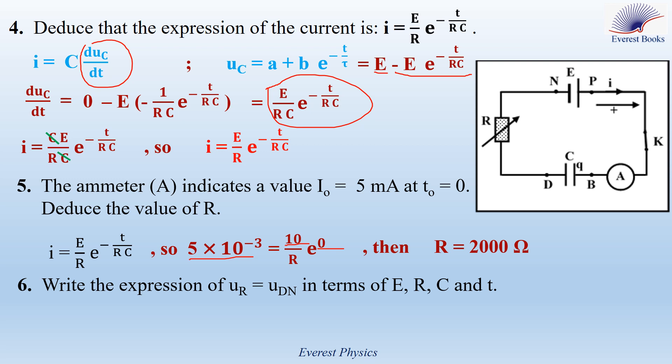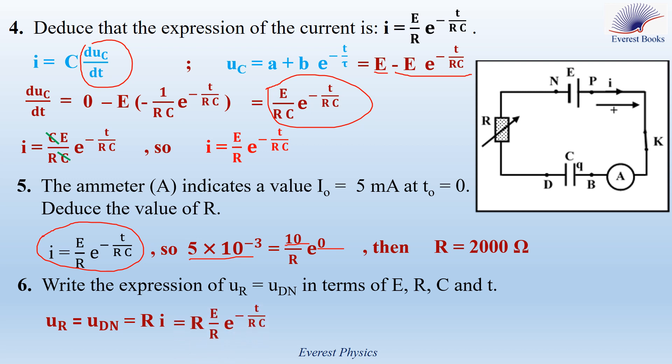Part 6: write the expression of the voltage across the resistor UR, which equals UDN, in terms of E, R, C, and t. We know that UR equals R times I. Replacing I by E over R times e to the power minus t over RC, R cancels R, and UR equals E times e to the power minus t over RC.